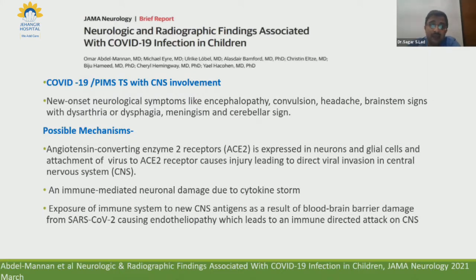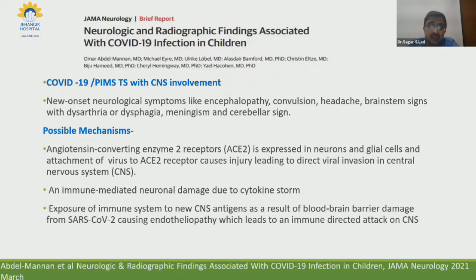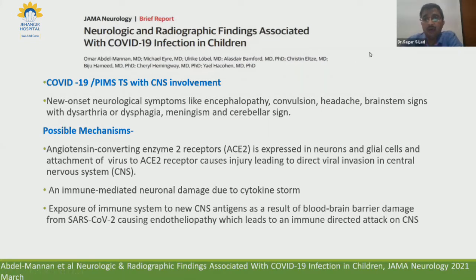Possible explanations for neurological involvement include encephalopathy, convulsions, headache, brainstem signs, dysarthria, dysphagia, meningism, and cerebellar signs. The mechanism may be direct viral invasion via ACE receptors expressed in neurons and glial cells. A second hypothesis is immune-mediated neuronal damage due to cytokine storm. The third mechanism may be exposure of the immune system to new CNS antigens as a result of blood-brain barrier damage from SARS-CoV-2 causing endotheliopathy, leading to immune-mediated attack on the central nervous system.